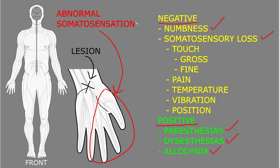Somatosensory abnormalities may include any or all of the symptoms of numbness, paresthesias, dysesthesias, or allodynia, or the sign of somatosensory loss. When trying to locate the lesion, it is helpful to know that symptoms from dysfunction of somatosensory pathways may radiate — meaning spread — beyond the somatosensory territory of that structure. However, the sign of somatosensory loss is usually restricted to the territory of that pathway. For example, with a lesion of a nerve at the wrist — as in carpal tunnel syndrome — patients often complain of symptoms not just in the expected area of the hand, but also in other parts of the hand or up into the forearm, while signs of somatosensory loss will stick to the normal anatomy of that nerve.